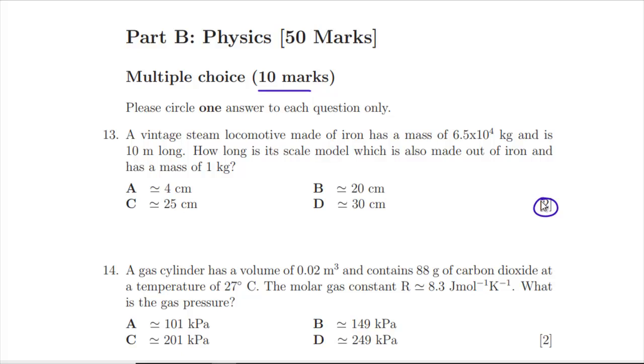Question 13: A vintage steam locomotive made of iron has mass 6.5×10^4 kg and is 10 meters long. How long is its scale model also made out of iron with a mass of one kilogram? Mass is proportional to volume, which is proportional to length cubed. So if we do length cubed divided by mass, they've got to be the same for each one.